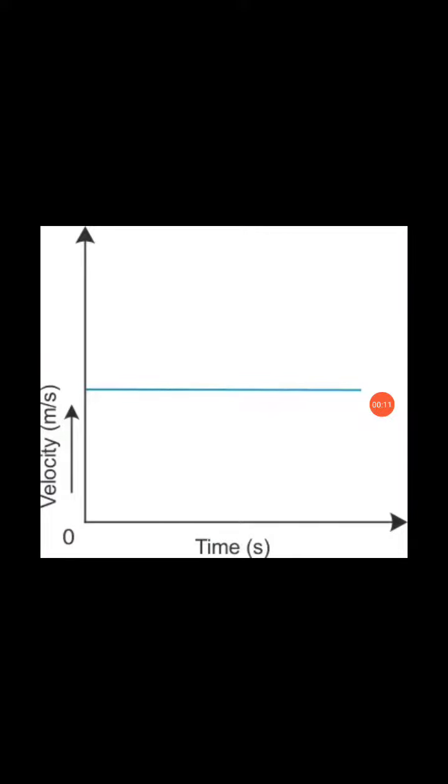A velocity-time graph is also a straight line. Here, time is on the x-axis while velocity is on the y-axis. The product of time and velocity gives the displacement of an object moving at a uniform speed.